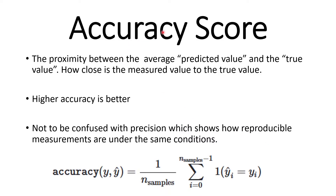Accuracy score. Accuracy is probably one of the most popular and most used metrics in classification problems. Basically, accuracy measures the proximity between the average predicted value and the true value — how close the measured value is to the true value. Higher accuracy is better, and accuracy should not be confused with precision, which shows how reproducible measurements are under the same conditions. This is the formula for calculating accuracy: y-hat is the predicted value, y_i is the actual value, and you take the sum divided by the number of samples.